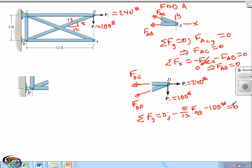This tells me that FDB is equal to negative 260 pounds or 260 pounds in compression. And we'll indicate that with a C in parentheses.